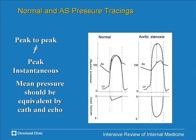There are two ways to measure pressure across the valve. The instantaneous gradient — measured by Doppler — is the highest pressure difference at any point in systole. The peak-to-peak gradient is what we measure by cath and is always lower than the peak instantaneous gradient. If you measure the mean gradient over systole, it should be the same whether measured simultaneously by echo or cath. A mean gradient greater than 40 mmHg indicates severe aortic stenosis.